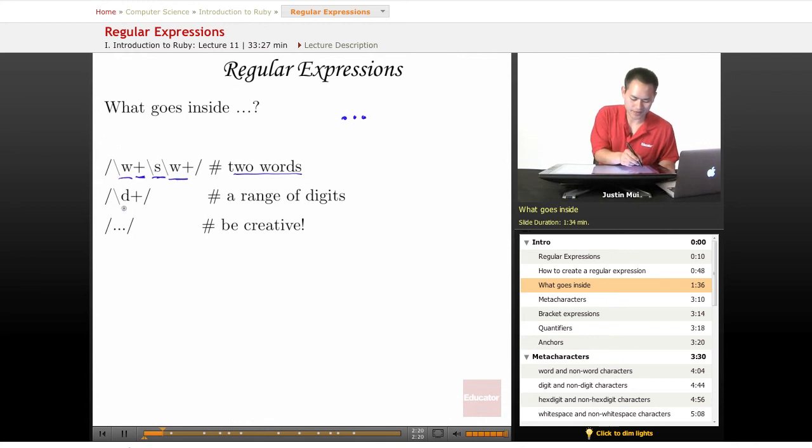Another one I have here is a range of digits. So it takes one or more digit characters, which is 0 through 9. And then the other one I have here is just dot dot dot.